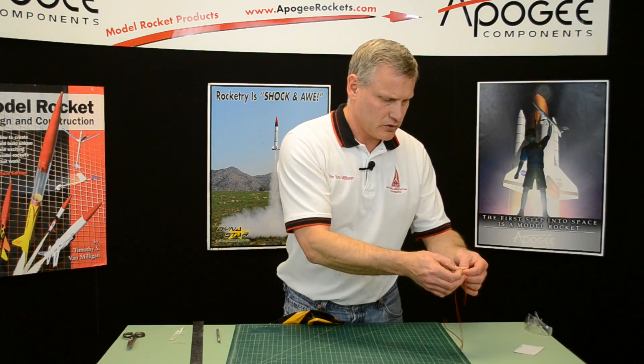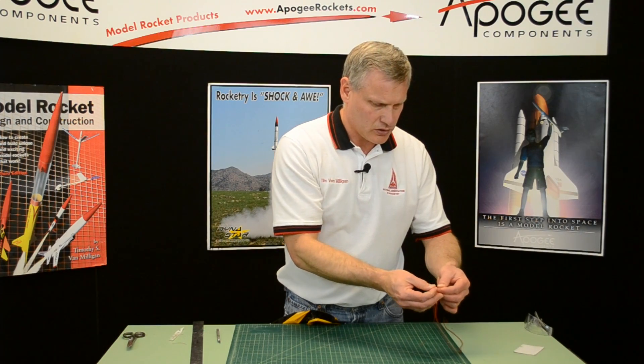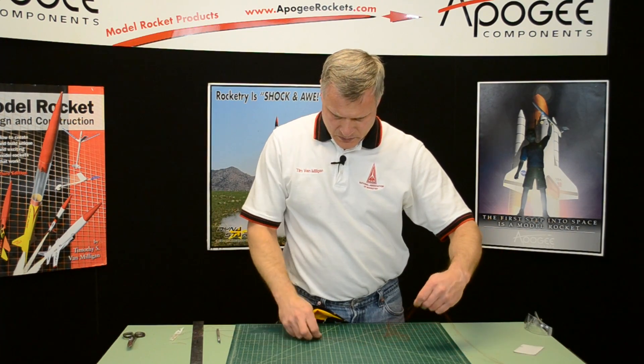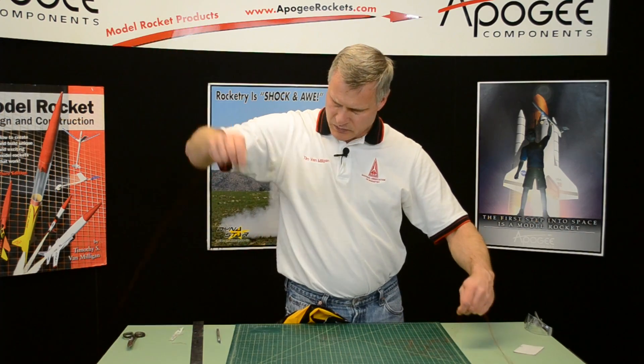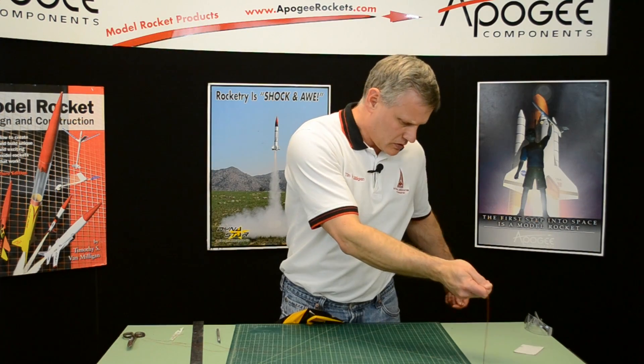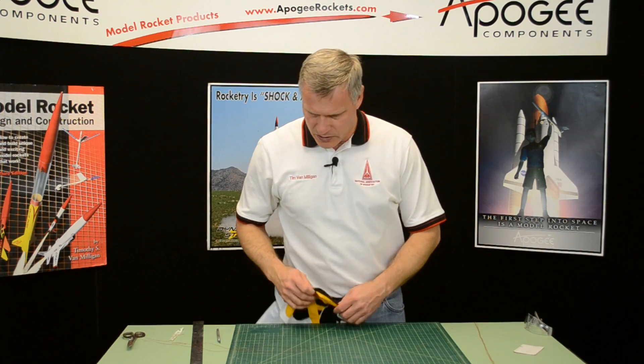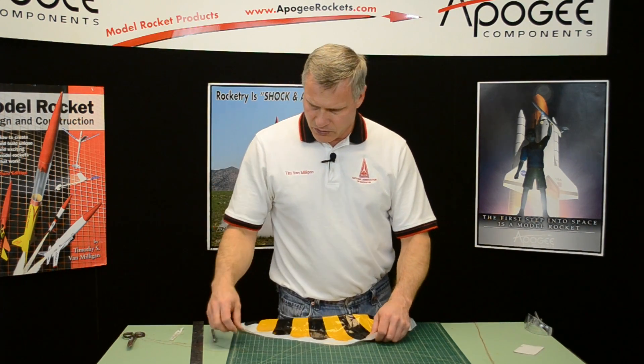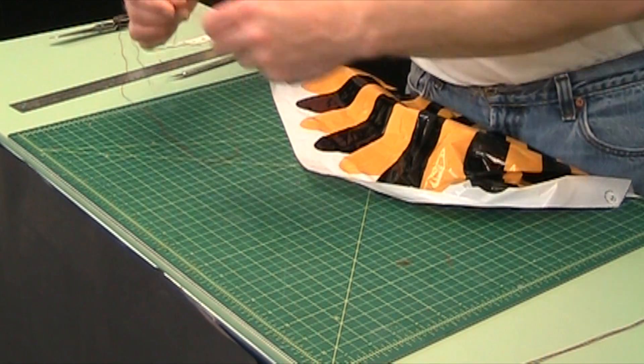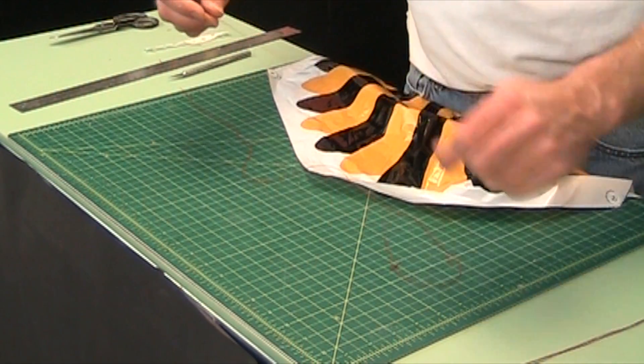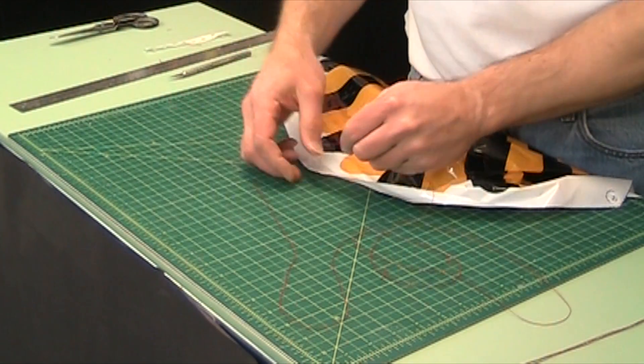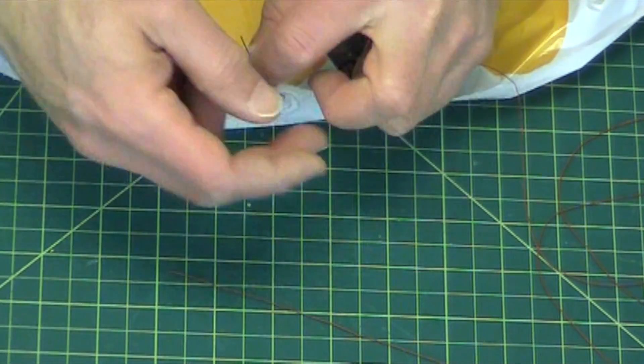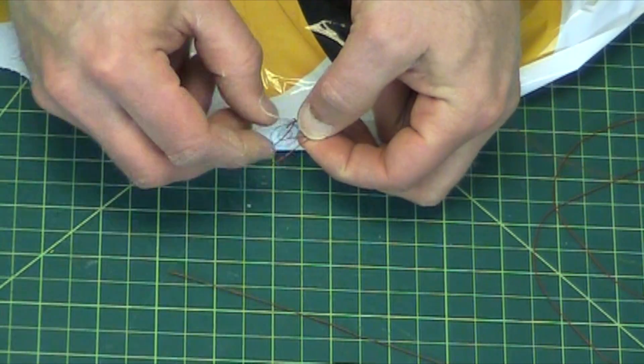So I'm going to pull one out. Keep them all neat. So now, I'll take one end. I'm going to pass it through the hole. I'm going to tie one knot.